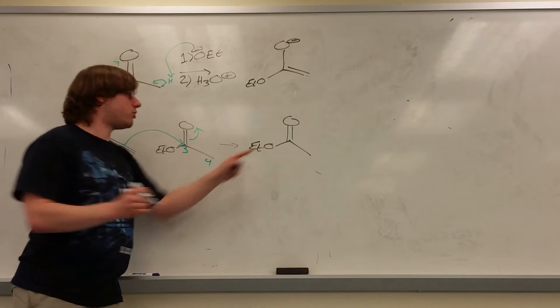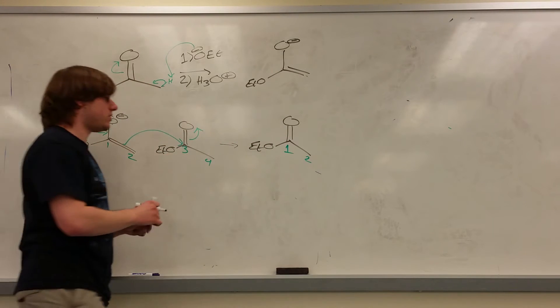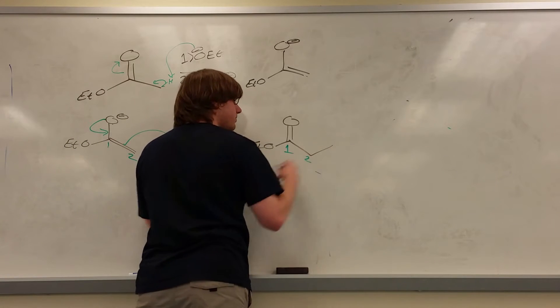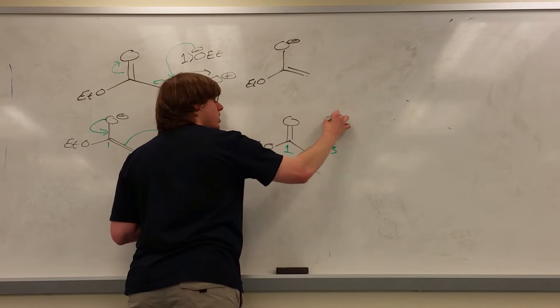Double bond of the oxygen reforms on one. One, the electrons from the one-two double bond go out to connect two to three. And three's double bond O gets swung up into an O minus.